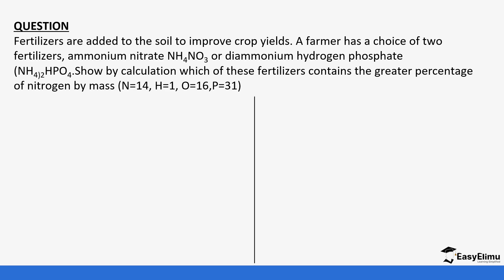Practice question: Fertilizers are added to the soil to improve crop yields. A farmer has a choice of two fertilizers — ammonium nitrate or diammonium hydrogen phosphate. Show by calculation which of these fertilizers contains the greater percentage of nitrogen by mass. We separate the two calculations.